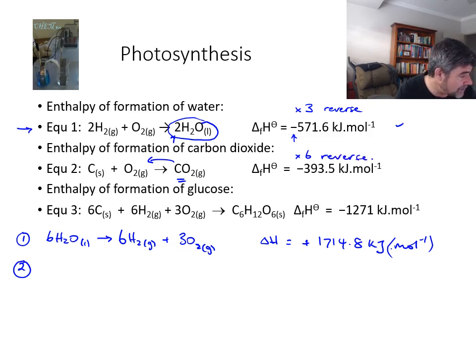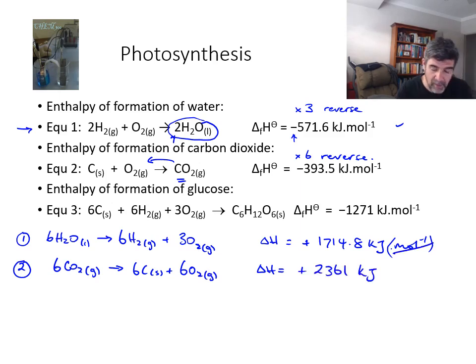So therefore, that's going to bring equation two into this form: 6CO2 gas goes to 6C solid plus 6O2 gas. And the delta H value for this one is equal to plus 2361 kilojoules. We'll remove the per mole because we're now looking at the total kilojoules.